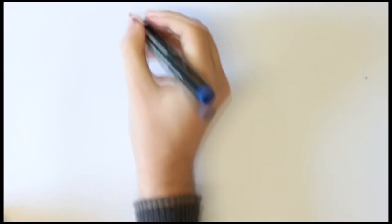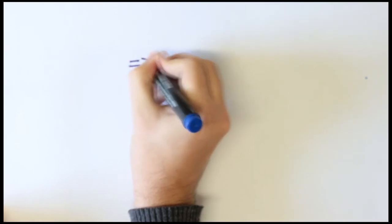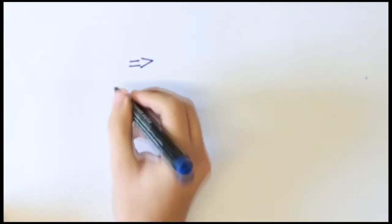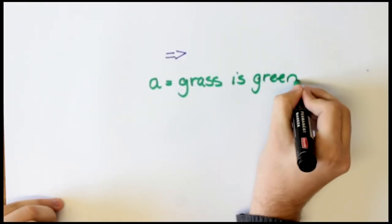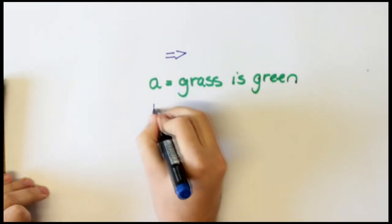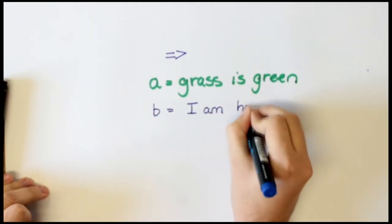Implication. You've seen implication used all over the place in proofs. But do you understand it well? We'll consider two things which are obviously true. Let A be grass is green and B I am human.